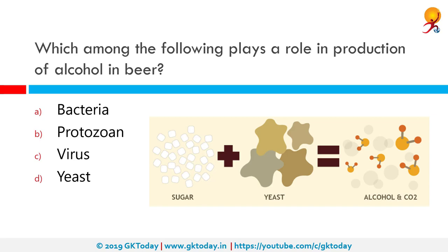Which among the following plays a role in the production of alcohol in beer? The correct answer is yeast. Alcohol — the metabolic product of yeast in wine and beer making — is specifically produced by yeast during fermentation.